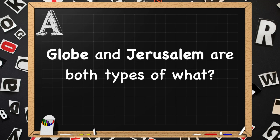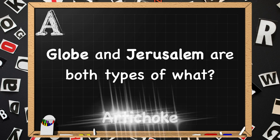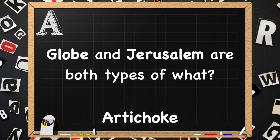Beginning with A. Globe and Jerusalem are both types of what? They are types of artichoke.